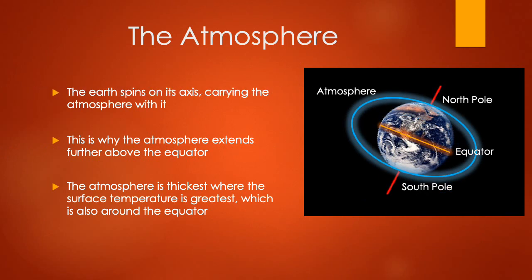The Earth spins on an axis that goes through the North Pole and the South Pole, and it carries the atmosphere with it. As the Earth spins, it carries the air above it around with it as well. That's why the atmosphere extends further above the equator. The atmosphere is thickest where the surface temperature is greater, so around the equator the atmosphere is thicker compared to the poles where it is slightly thinner. We have a greater vertical extent around the equator than compared to the poles.